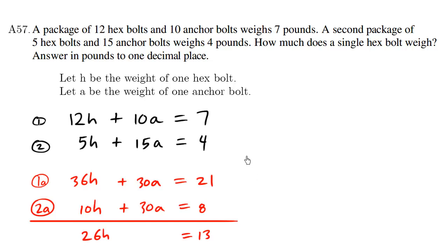I'm going to divide both by 26. So I have H is equals to 13 over 26, which is equals to 1 half, or 0.5. So the weight of one hex bolt, H, is 0.5 pounds.